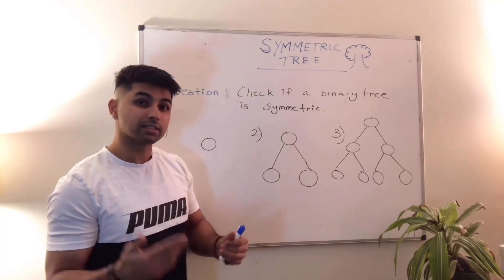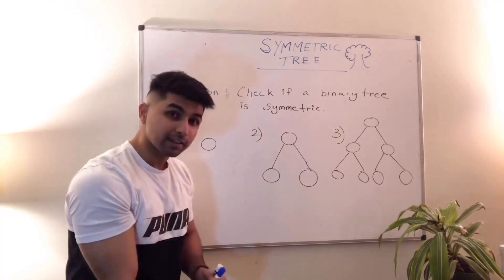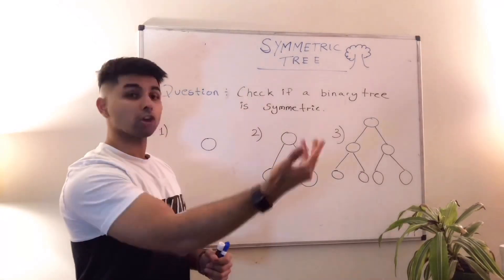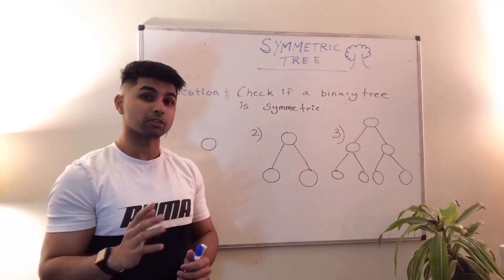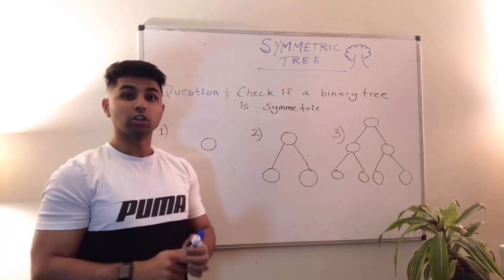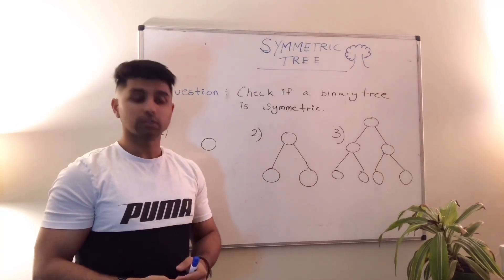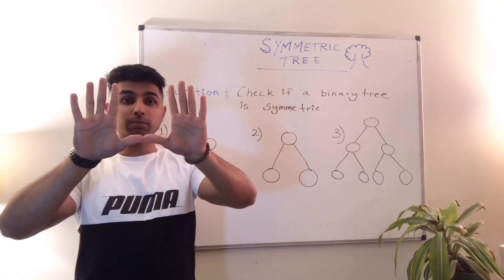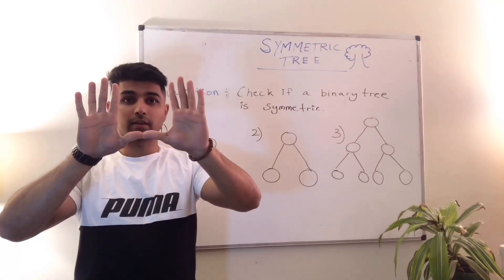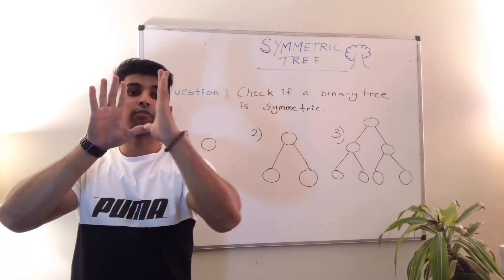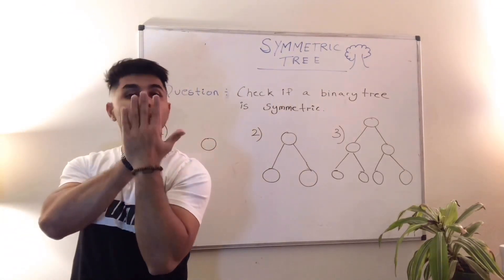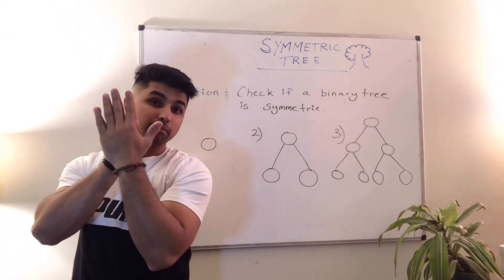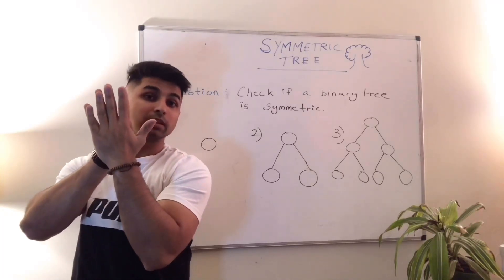An object is considered to be symmetric if you split that object dead in the center, and you fold the left side of that split object onto the right, and it perfectly overlaps. For example, let's take my hand. If I was to split my hand up my thumb, which is the middle, and I fold my left side onto my right, it lays over my right hand pretty nicely. This means it would be symmetric.